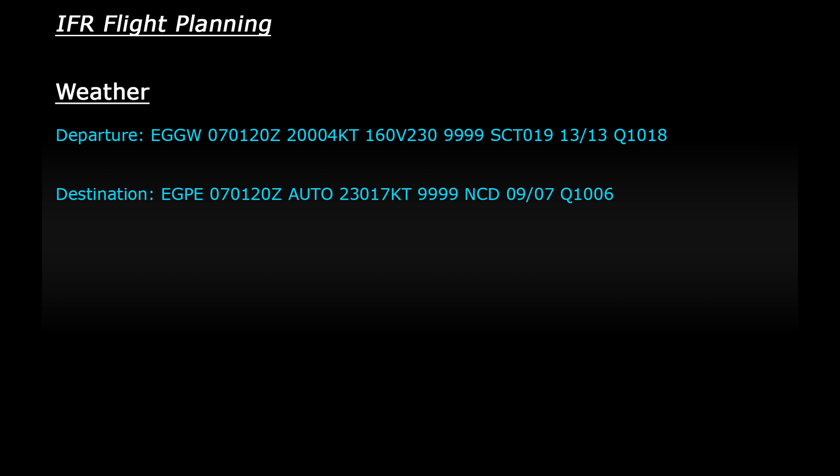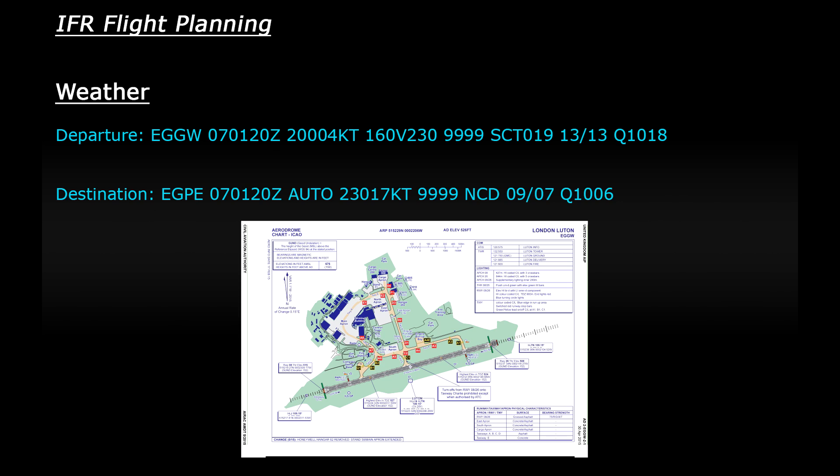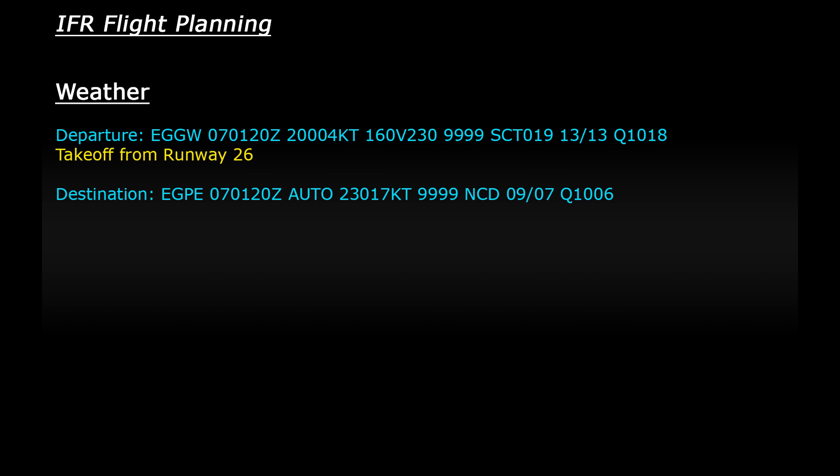At this point I'm also going to have a look at the weather. I'm not going to worry about winds aloft or high-altitude winds — I'd recommend simply checking the weather at your departure and arrival airports. By looking at the weather you can figure out which runway will be active at both airports and begin planning departure and approach procedures. At Luton, the winds are coming from 200 at 4 knots, variable between 160 and 230 degrees, which suggests planes will be taking off from runway 26.